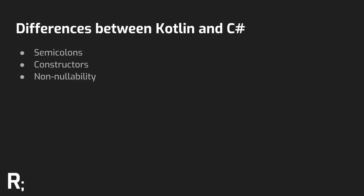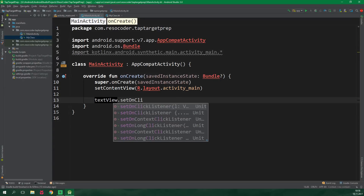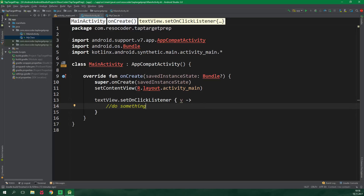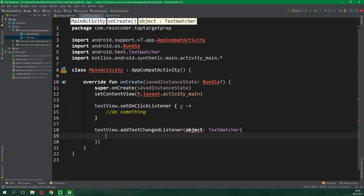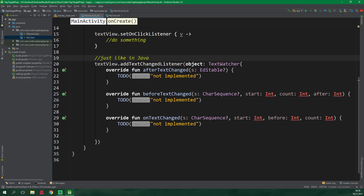There are also similarities between Kotlin and C#, and one of them is the ability to use lambdas out of the box. In Kotlin you can even use Java-like anonymous classes — in Kotlin they are called objects — which is useful when you are creating listeners. When the listener has only one method it can be automatically converted to a lambda; for example, this is the case with the OnClickListener. If the listener has multiple methods, you need to use an object which will implement the desired interface.